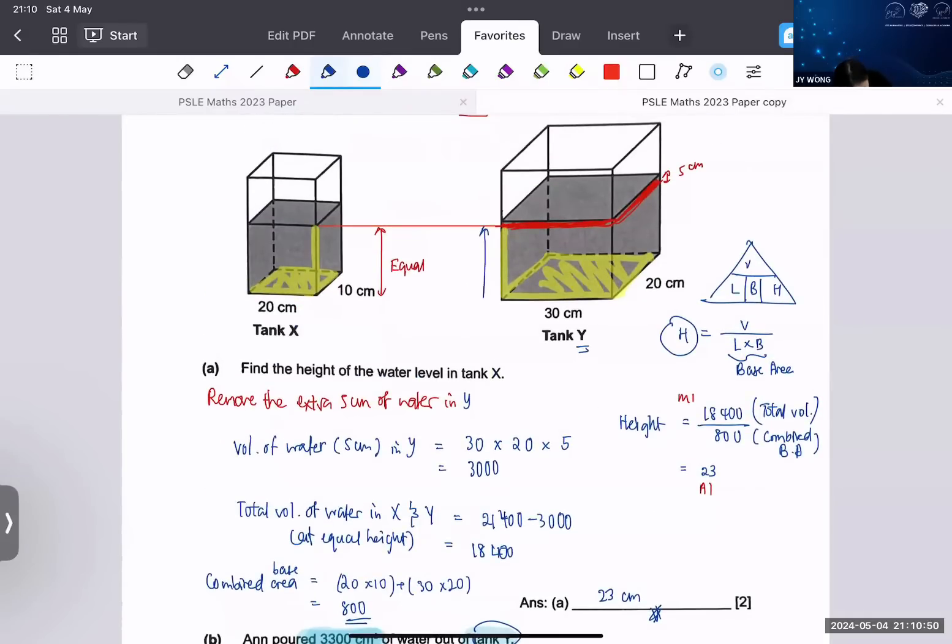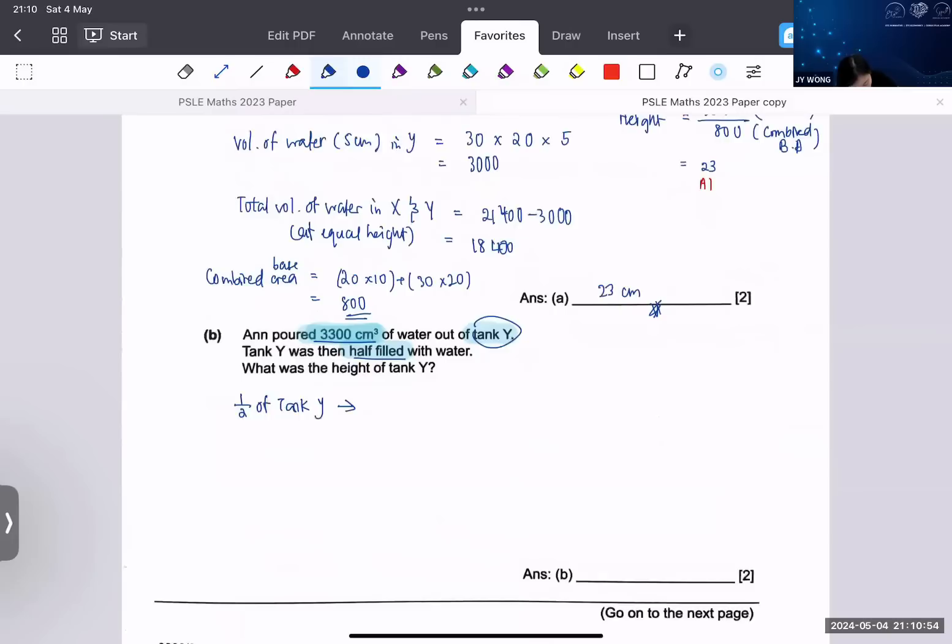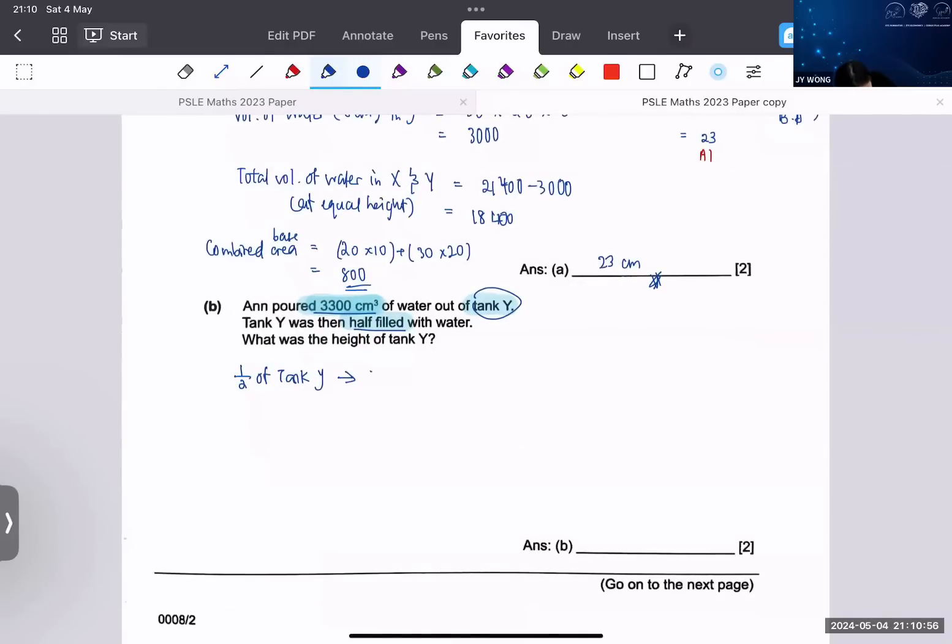Volume of tank Y at first - so what would the volume of tank Y be at first? We know the height now, right? Just now we found out that this is 23. So the height of water in tank Y was 23 plus 5, so it will be 30 times 20 times 23 plus 5.